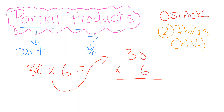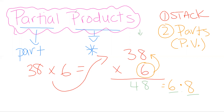Step two is where we do the parts, and we're going to do this by place value. I see I have a 6 in the ones place, and I'm going to multiply it by the 8 that's in the ones place. This is a lot like the area model where we expand and break things apart. Six times eight equals 48 — I write the 8 in the ones place and the 4 in the tens place.